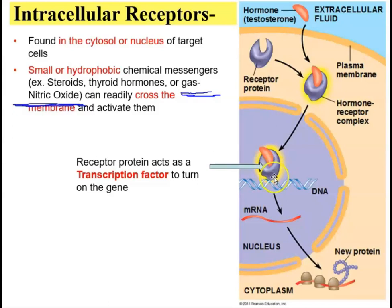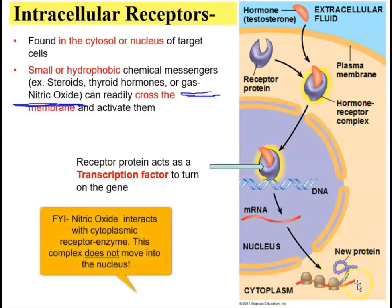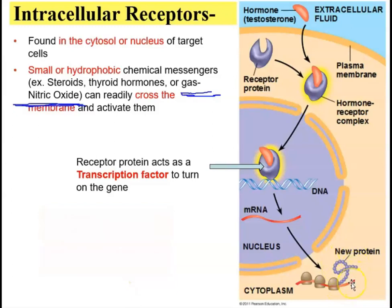The receptor protein acts like a transcription factor and turns on the gene. The result is the production of an mRNA molecule — the gene has been transcribed. The mRNA leaves the nucleus, associates with ribosomes, and translation begins. The result is the synthesis of a new protein that accumulates within the cell. In this case, the hormone is testosterone — a male sex hormone that produces the proteins responsible for male physical features.